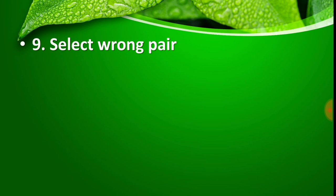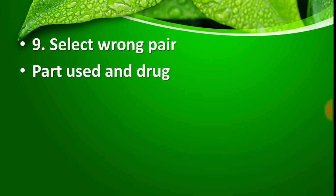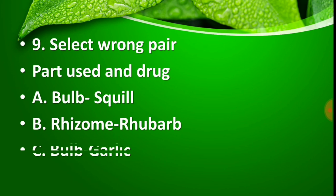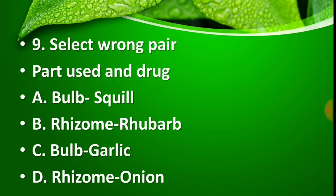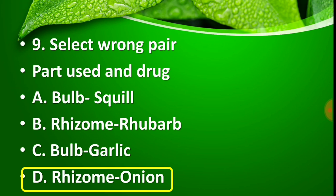Question number 9: Select the wrong pair from the given part used and drug — Option A: bulb, Squill; Option B: rhizome, Rhubarb; Option C: bulb, Garlic; Option D: rhizome, Onion. The right answer is Option D — rhizome and Onion is the wrong pair. Onion is a bulb-type plant, just like Garlic and Squill, not a rhizome.